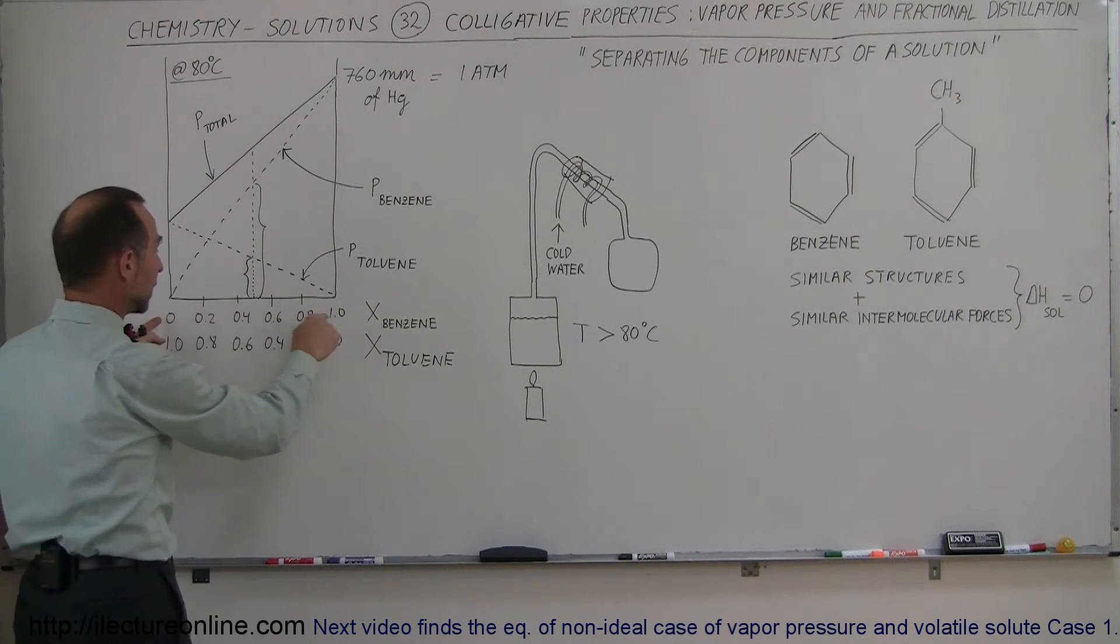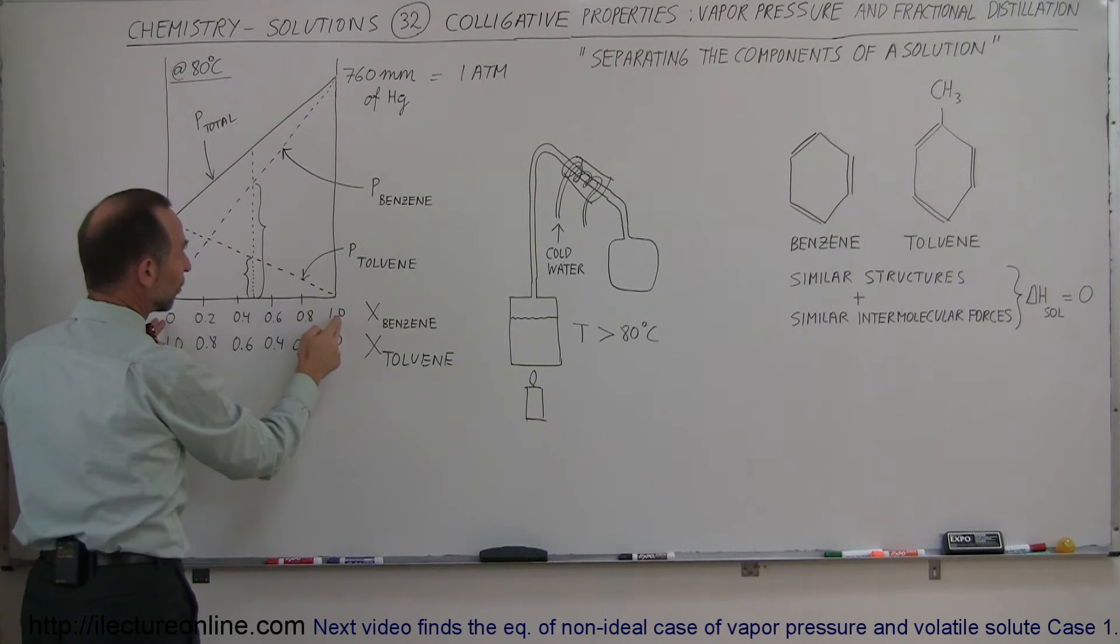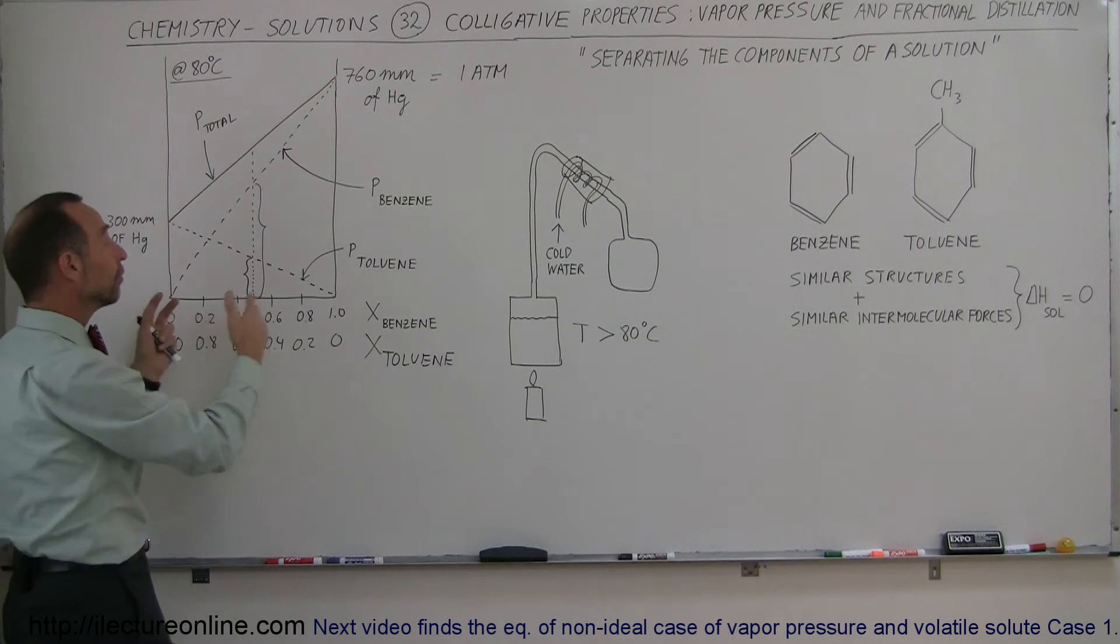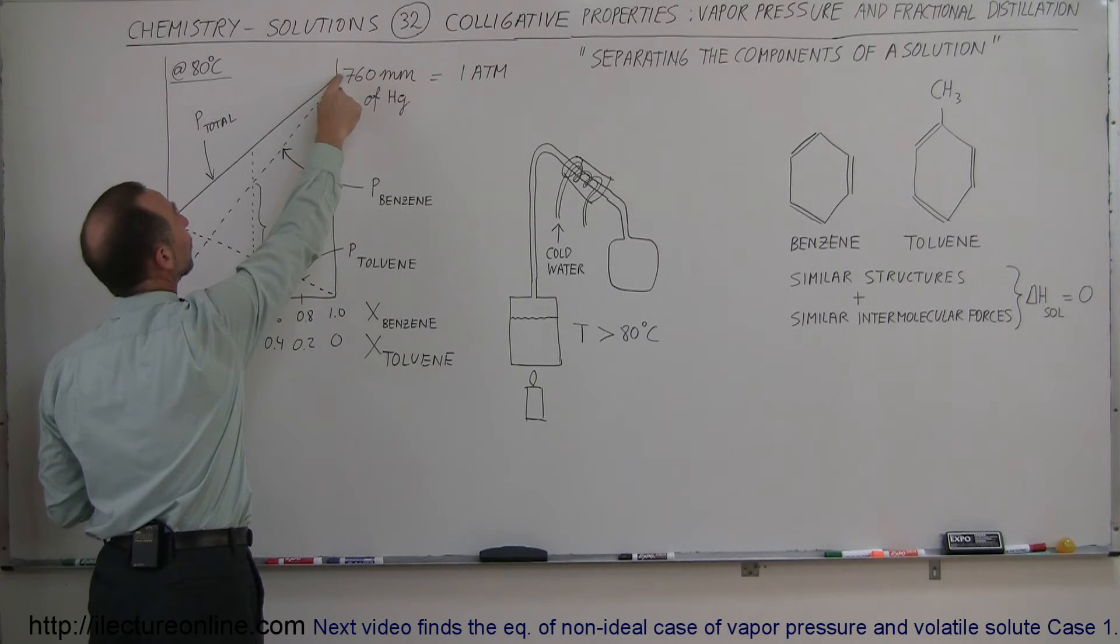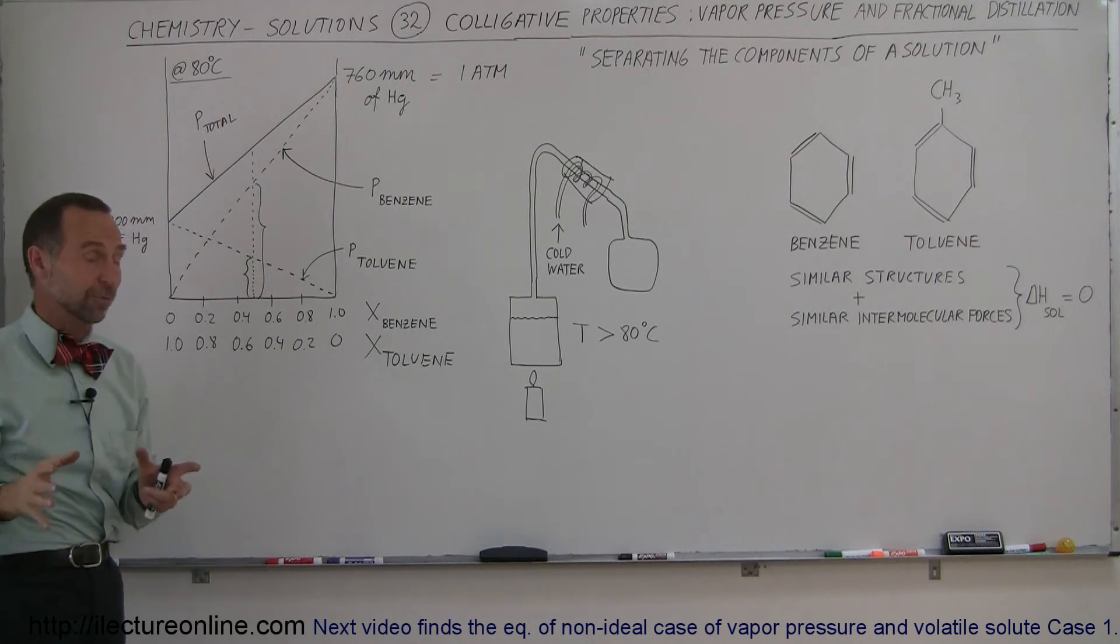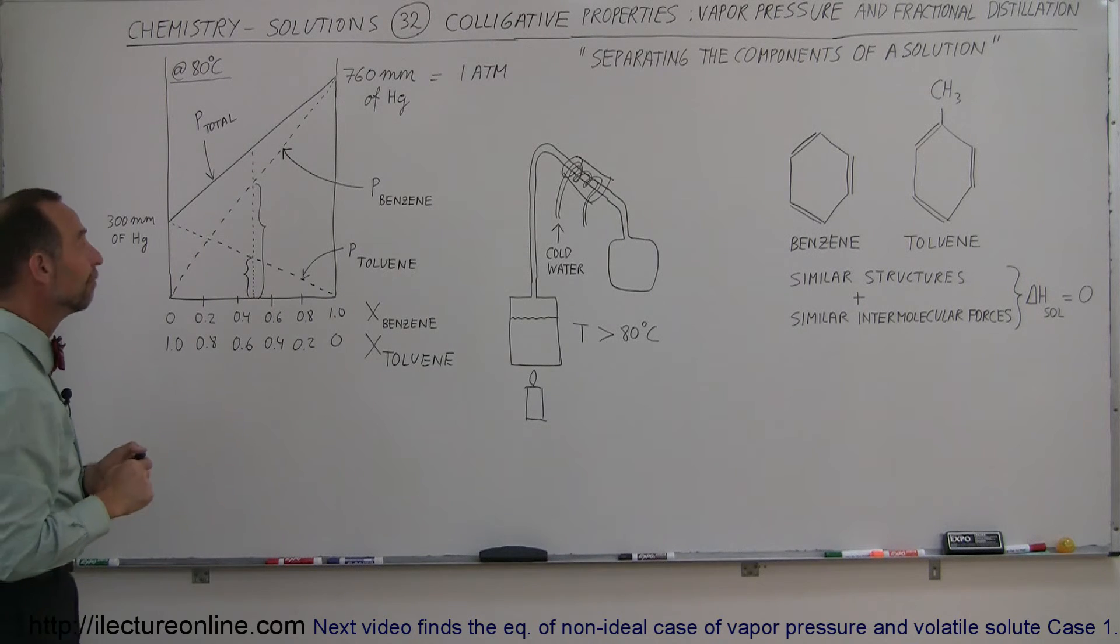For example, the top line here represents the molar fraction of benzene. If 100% of the solution is benzene, then the entire vapor pressure of the solution is due to the vapor pressure of benzene, which in this case, at 80 degrees centigrade, would be 760 millimeters of mercury, which is one atmosphere, and therefore also the boiling point of benzene.